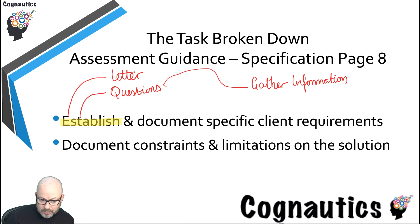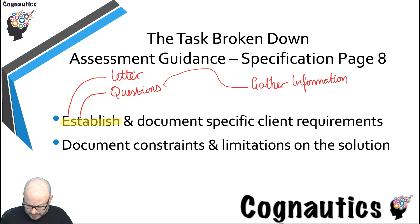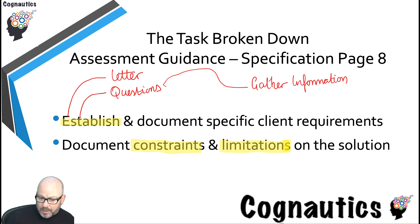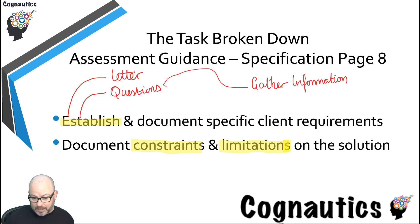Once you've done that, the next thing is to document the constraints and limitations. You might think these are the same thing, but think of constraints as more about the platform you're going to use, and limitations as something more like the budget. We'll cover that towards the end of this task, but we're starting with establishing and documenting the specific client requirements.